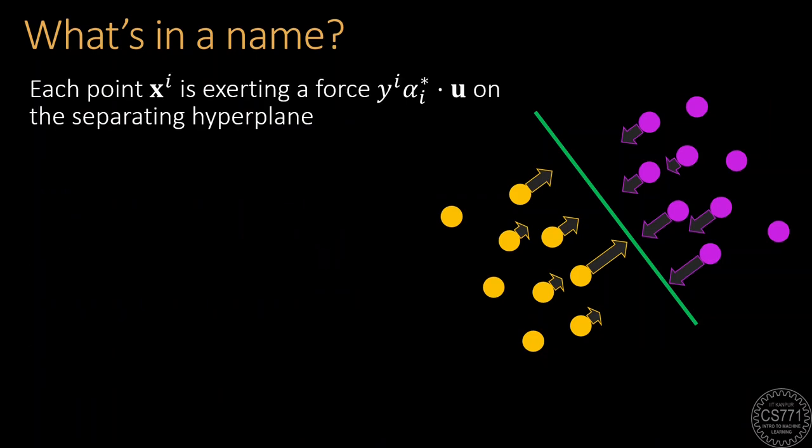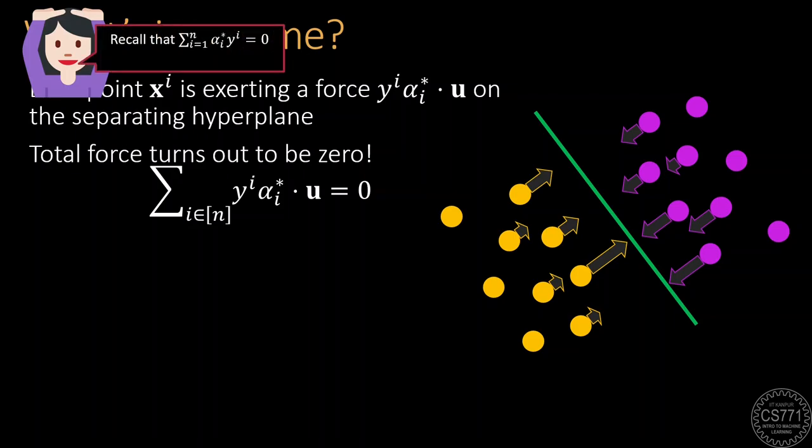If we agree with this setup, then we find that the new constraint on alpha introduced by the explicit bias term tells us that the total force on the hyperplane is zero. This means that the forces will not let the hyperplane shift or accelerate in any direction.